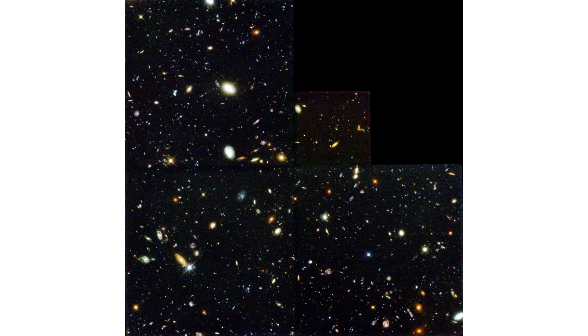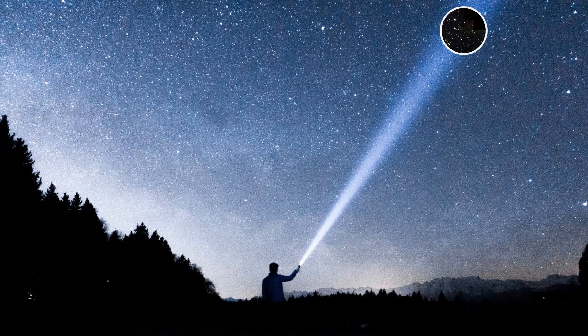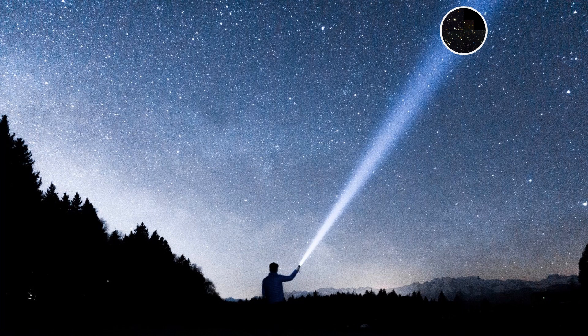So we look out in the night sky, we've chosen the direction, we've taken a picture. Nothing special about that direction. And within that picture we've seen thousands of galaxies, and each galaxy is of the order a hundred billion stars. We're getting a feel now for just how much kind of stuff there is in the universe. How much of the sky are we looking at in that image?